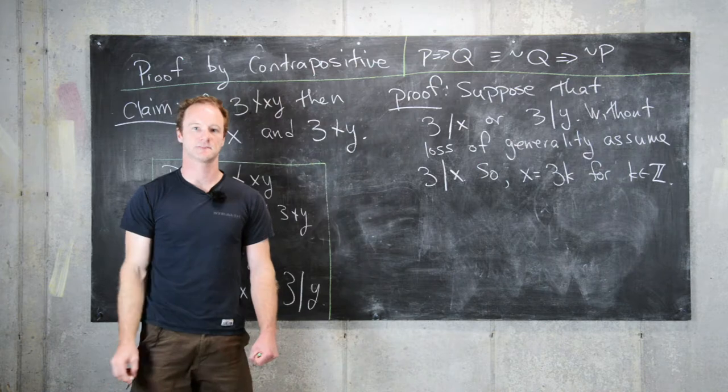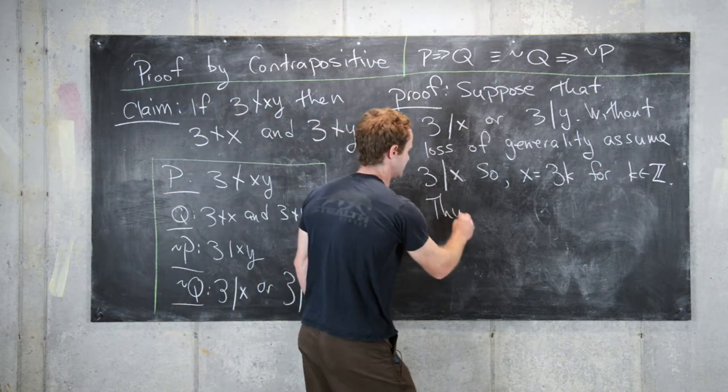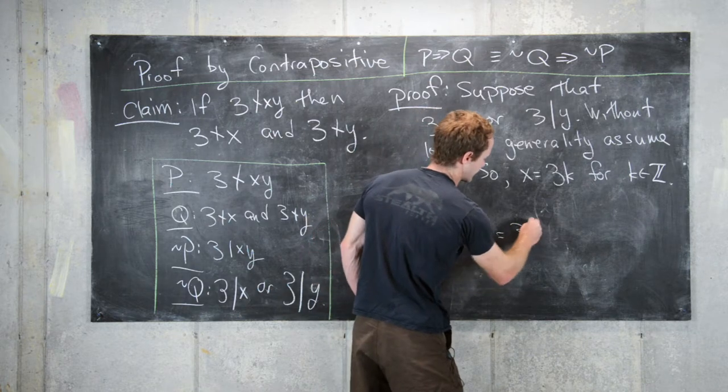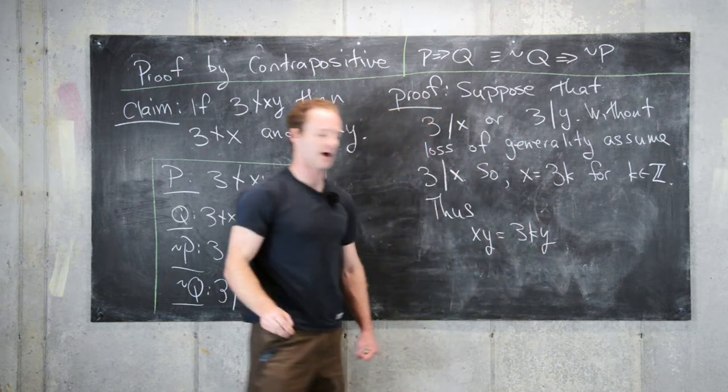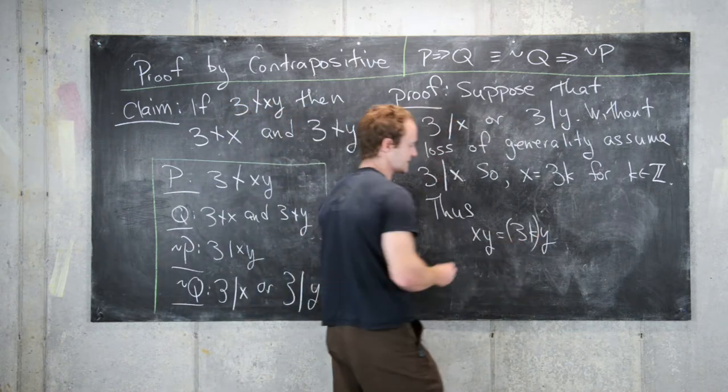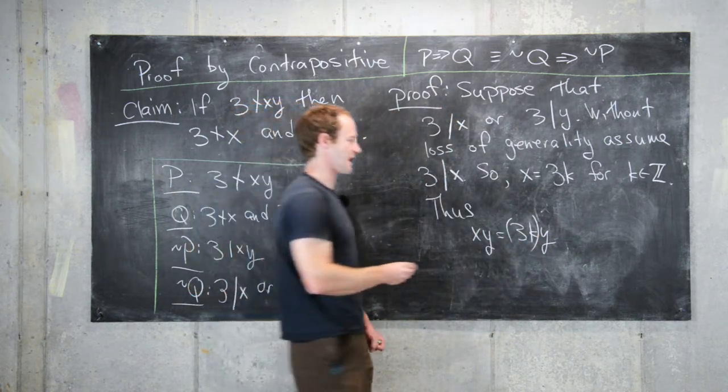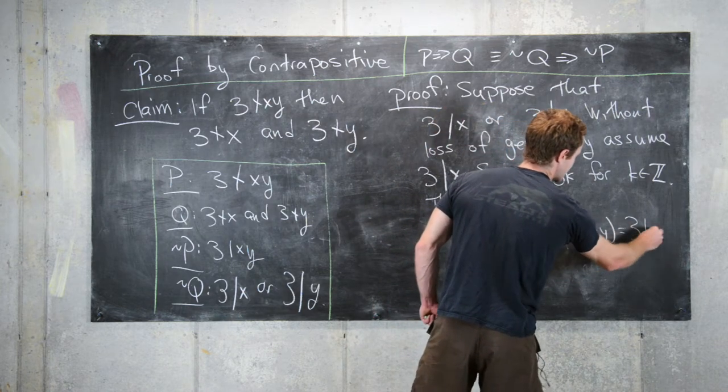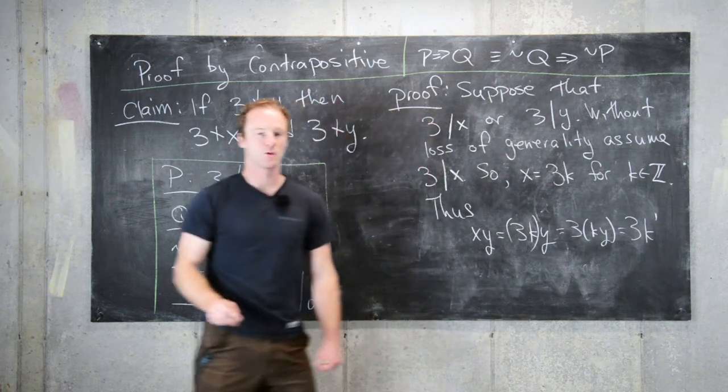Thus, X times Y equals 3K times Y. Let's put some parentheses here to show what's happening: this equals 3 times KY.